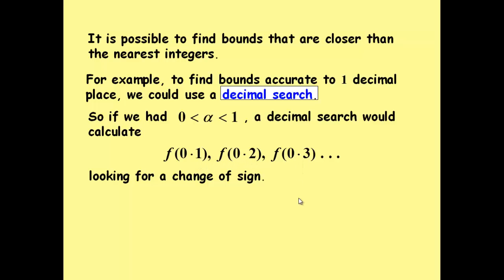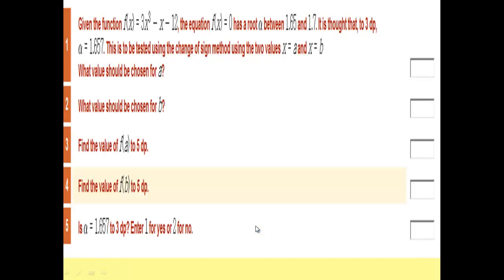0.3, looking for a change of sign. As soon as we got a change of sign between any two consecutive decimals, then we would say that the decimal solution lies there. For example,